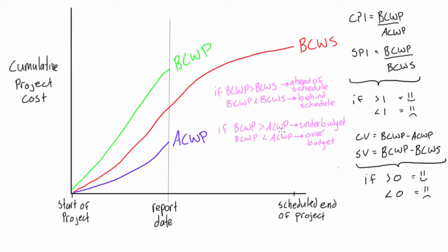For example, if BCWP is $4,000 and ACWP is $2,000, then CPI = 4000 / 2000 = 2, which is greater than one, so we're under budget. If those values were switched, CPI would be 0.5, indicating the project is over budget. The same logic applies to SPI when comparing BCWP and BCWS.